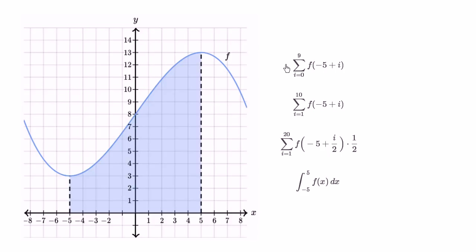This first expression right over here — we're taking the sum from i equals zero to nine. We're actually taking the sum of 10 things because we're taking the zeroth, first, second, third, all the way up to ninth. So this is the sum of 10 things because we're starting at zero. And we start at f of negative five plus zero — so that's this height right over here.